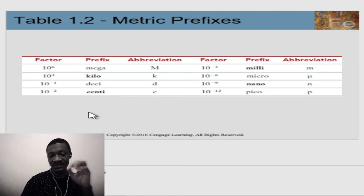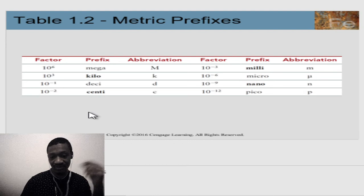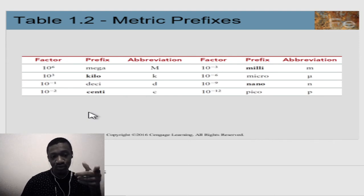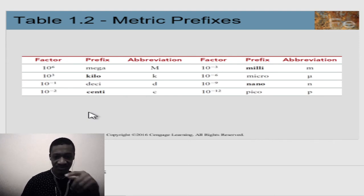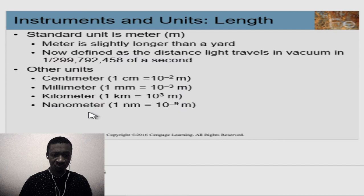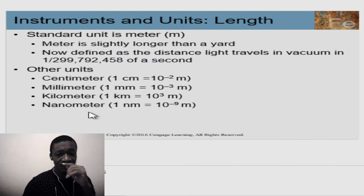Nano means very small. You also have pico which is 10 to the minus 12, and one that isn't listed — Angstrom, which is 10 to the minus 10. So you have all of these prefixes with their corresponding power-of-ten values used in measurement instruments and units.